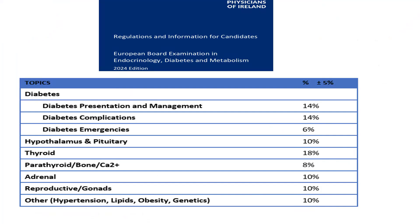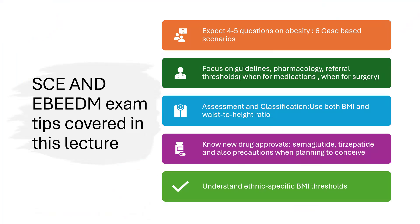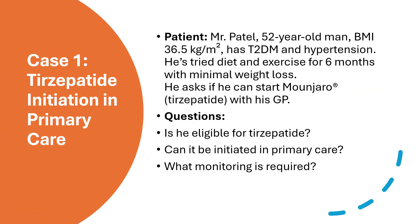I'm going to cover around six case-based scenarios to address these guidelines. They will look into pharmacology, referral thresholds — when to start medications and when to refer for surgery — assessment and classification of obesity beyond BMI, including waist-to-height ratio, drug approvals surrounding semaglutide and tirzepatide in the NHS, precautions when planning to conceive, and ethnic-specific BMI thresholds.